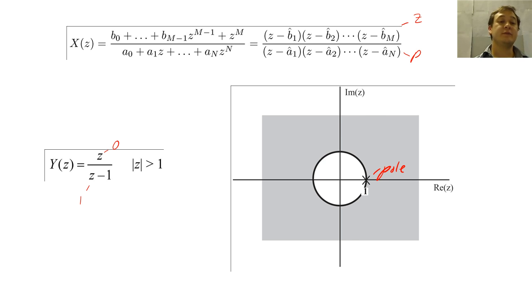In this example, we have a pole at two and a zero at zero. For this left-sided Z-transform, the pole marks the outer boundary of the region of convergence, and the zero is inside the ROC.